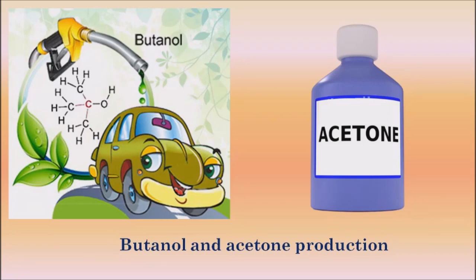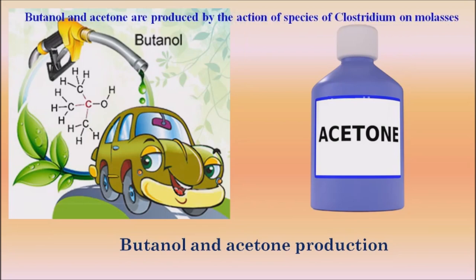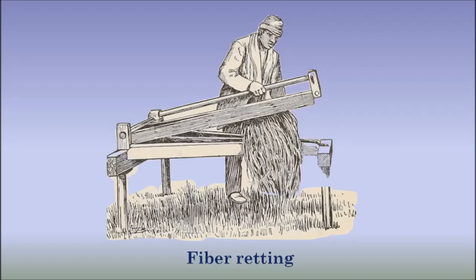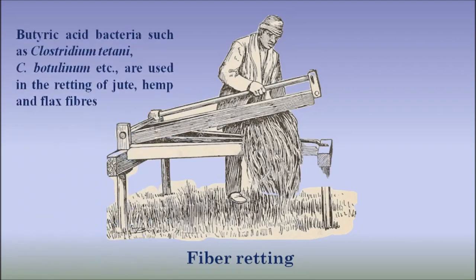The next industry is butanol and acetone production. Butanol and acetone are produced by the action of species of Clostridium on molasses, and are used as solvents in different industries. The next industry is the fiber retting industry. Butyric acid bacteria such as Clostridium tetani and Clostridium botulinum are used in the retting of jute, hemp and flax fibers, whereby the bath fibers become loose and can be extracted easily.